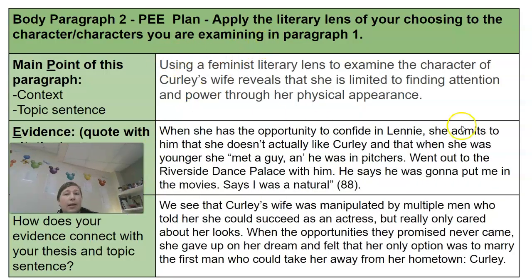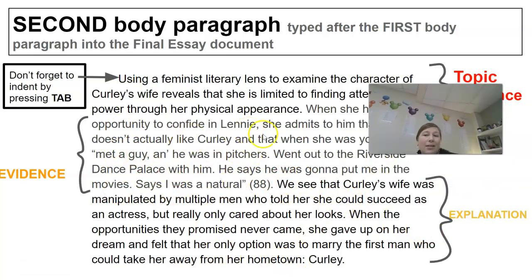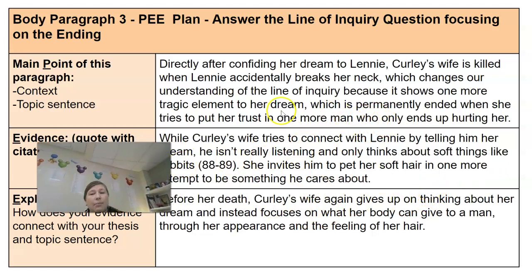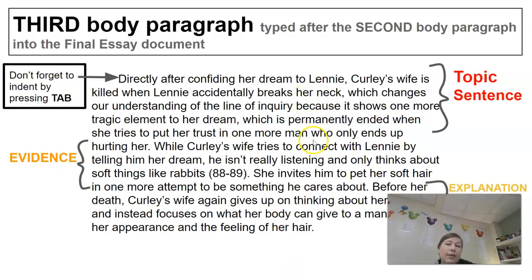Here's a second body paragraph examining the character a little bit more. This one is looking at the feminist lens to answer the question. Again, topic sentence, evidence, a couple of sentences, and an explanation to show why that evidence helps answer your topic sentence. The last body paragraph answers the line of inquiry thinking about the ending of the book — how your answer may have changed, what happened at the end, and whether that is still impacting the characters. This one is slightly shorter, probably just five sentences. Don't forget to tab — topic sentence, evidence, explanation.